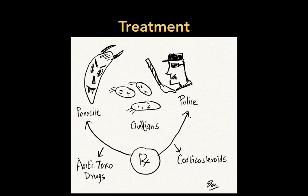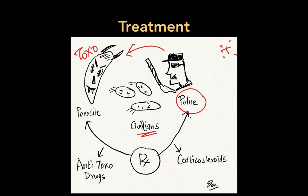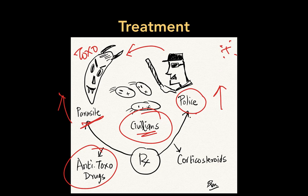The treatment principle: toxo is a parasite that triggers an immune response, but as a side effect the normal cells also get damaged. The aim of treatment is twofold: give anti-toxo drugs to eliminate Toxoplasma gondii parasites, and give corticosteroids to reduce the inflammation. These are the two pillars of treatment of toxoplasmosis.